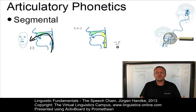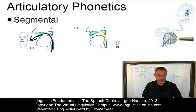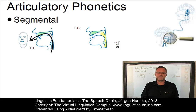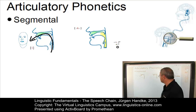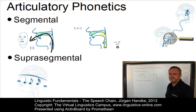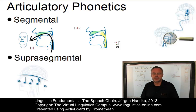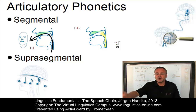Vowels and consonants are the basic segments of speech. Together, they form syllables, larger units, and eventually utterances. Superimposed on the segments are a number of additional features known as supra-segmental features. The most important ones are stress, loudness, pitch, and length.